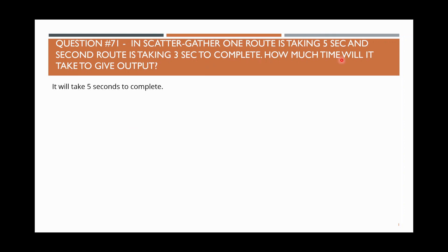For example, you have two routes in your Scatter-Gather. Scatter-Gather normally works in parallel. The first one is taking five seconds and the second one is taking three seconds. So overall, how much time will it take? Because both things are running in parallel, it will take the maximum time — so it will take five seconds only, because it runs in parallel.